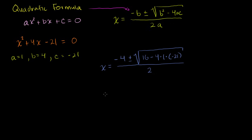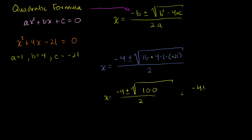So what does this simplify to? We get x = −4 ± √(16 − 4·1·(−21)). We have a negative times a negative, which gives us a positive. So we have 16 + 84, which is 100 — a nice perfect square. All of that over 2. So this equals (−4 ± 10) / 2, which is −2 ± 5. That means x = −2 + 5 = 3, or x = −2 − 5 = −7.